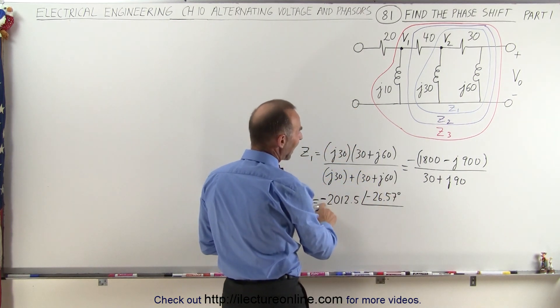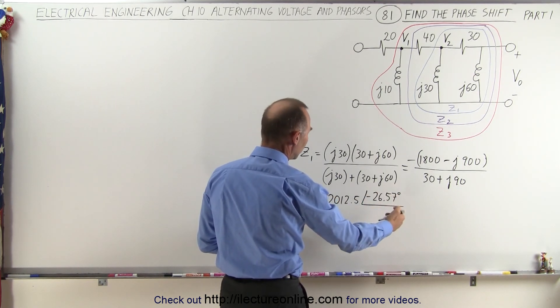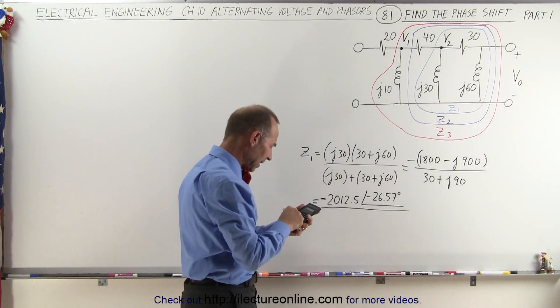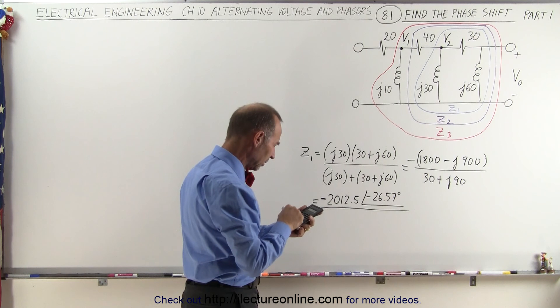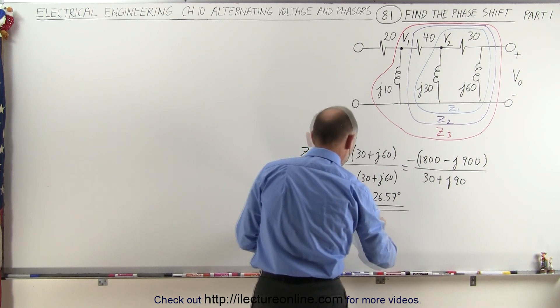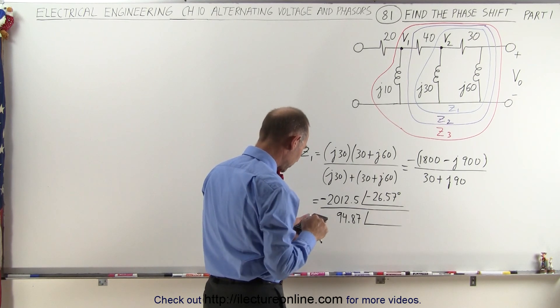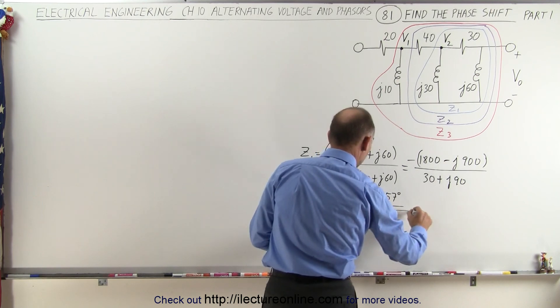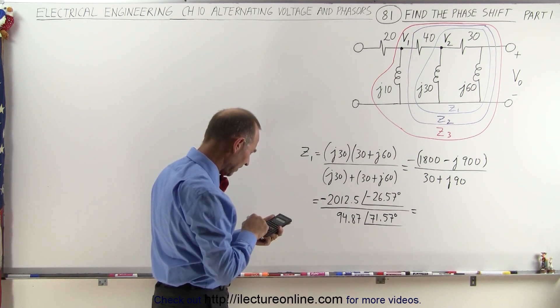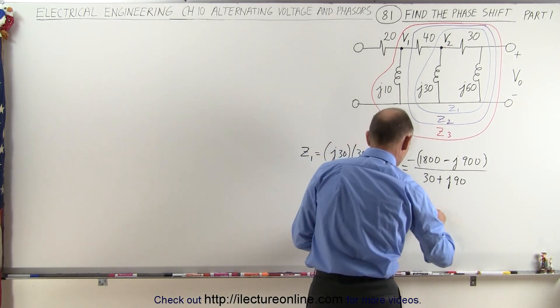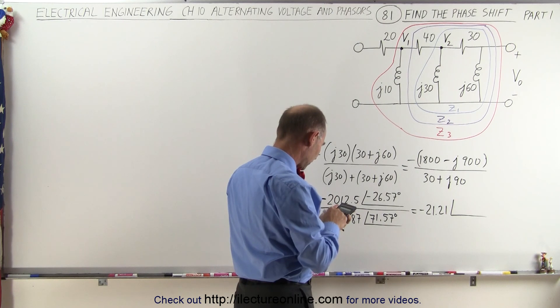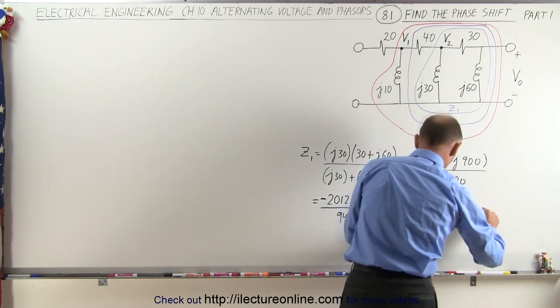Now this negative, we can add that, that will then add 180 degrees to the phase shift if you want to, or we can keep it for now and work out the rest first. So we're going to divide this by 900 plus 90 squared, take the square root, that gives us 94.87, with a phase angle of 3, take the inverse tangent, 71.57 degrees. So now, when we divide that into that, we get 2012.5 divided by 94.87 equals, that's minus 21.21, with a phase angle of 26.57 negative, and minus 71.57, that's a minus 98.14 degrees.